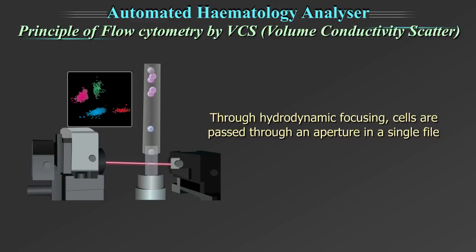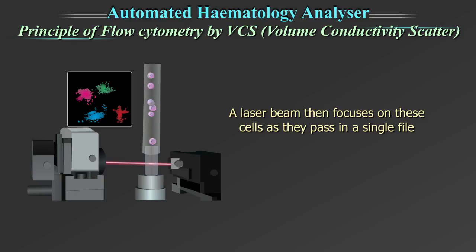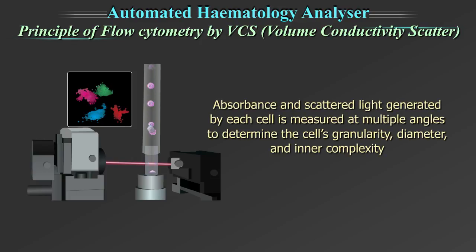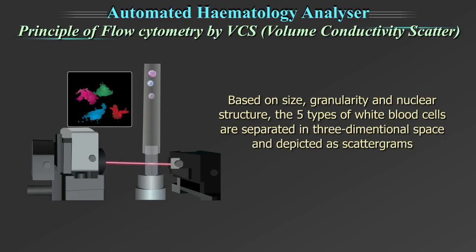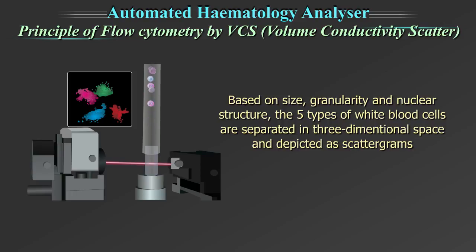Through hydrodynamic focusing, cells are passed through an aperture in a single file. A laser beam then focuses on these cells as they pass in a single file. The absorbance and scattered light generated by each cell is measured at multiple angles to determine the cell's granularity, diameter, and inner complexities. Based on size, granularity, and nuclear structure, the five types of white blood cells are separated in three-dimensional space and depicted as scattergrams.